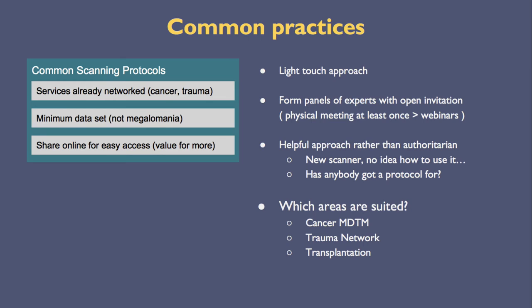Rather than a megalomaniac approach of saying you will scan this in a certain way, I would think of a minimum data set approach: if you're going to show this at this MDT, please include at least these three sequences in your scan. Beyond that, add whatever you like locally, but we'd like to see these three for our meeting. We'd share these protocols online for easy access — useful if you bought a new scanner, for example. At the moment we usually ask somebody who's already got one, or we ask the vendor. We could share these protocols within our collaborative.